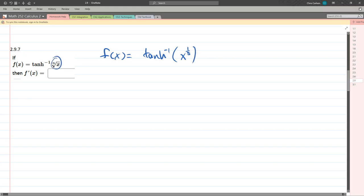It's written as a fifth root, but that means a one-fifth power. And we're definitely going to be needing the chain rule here. So let's go ahead and take derivative.